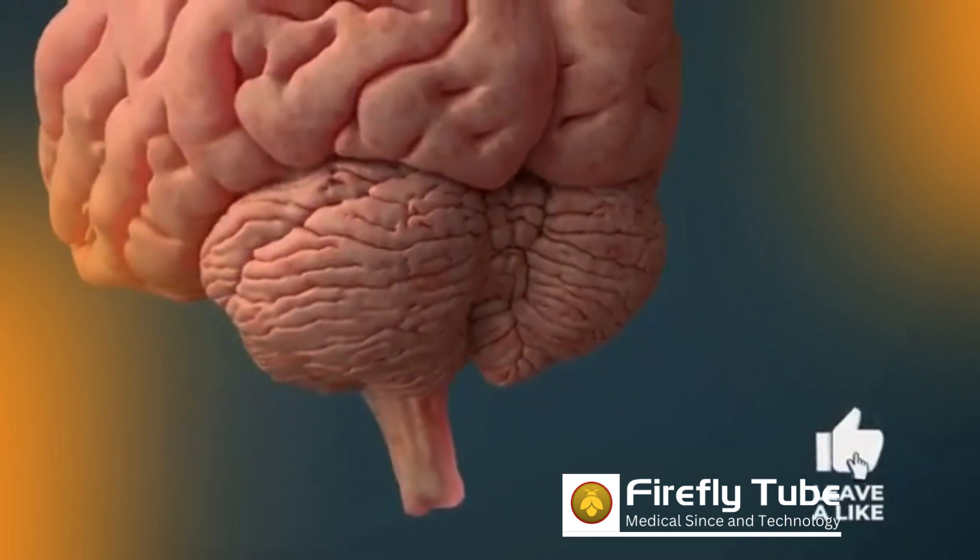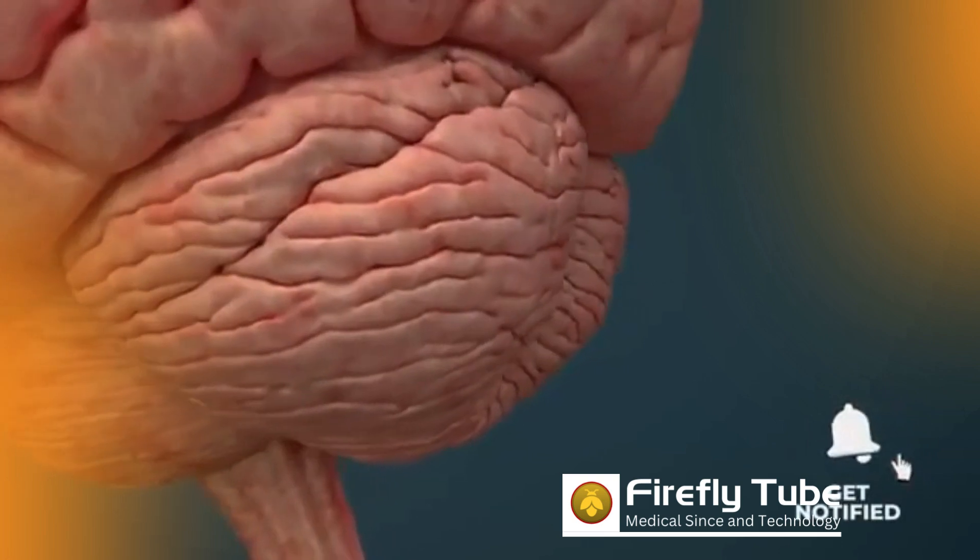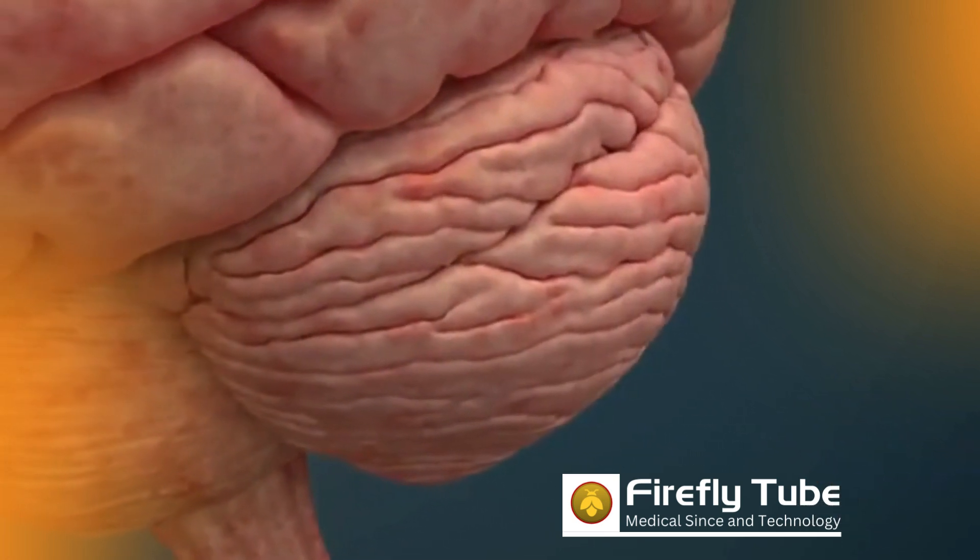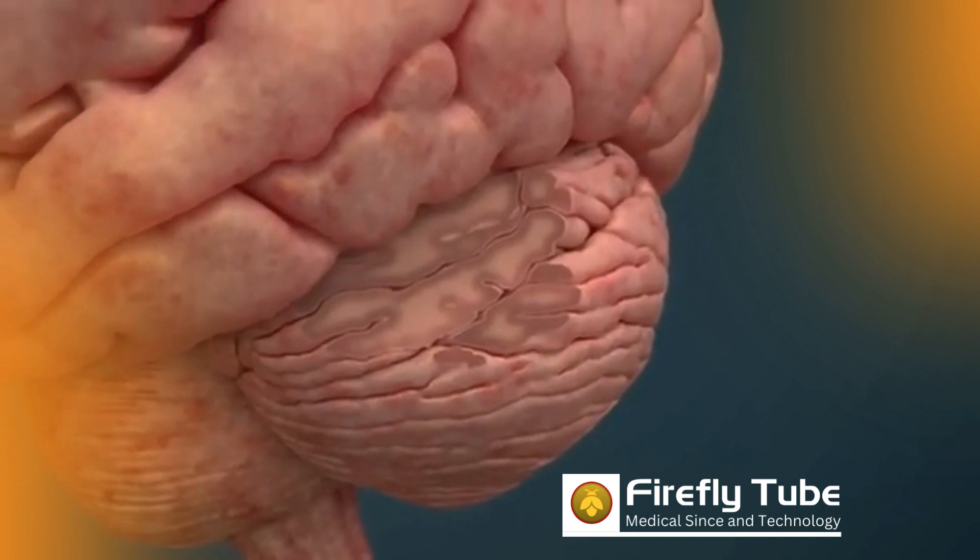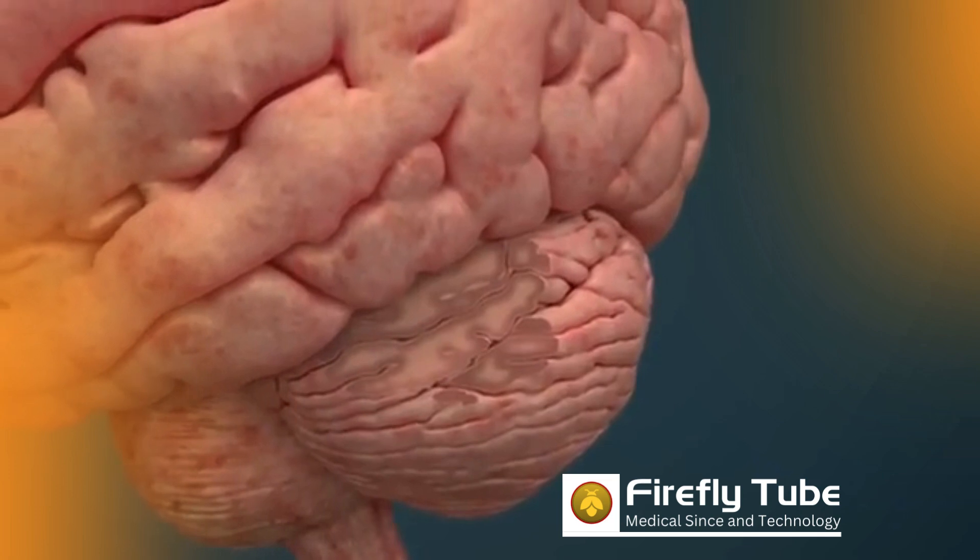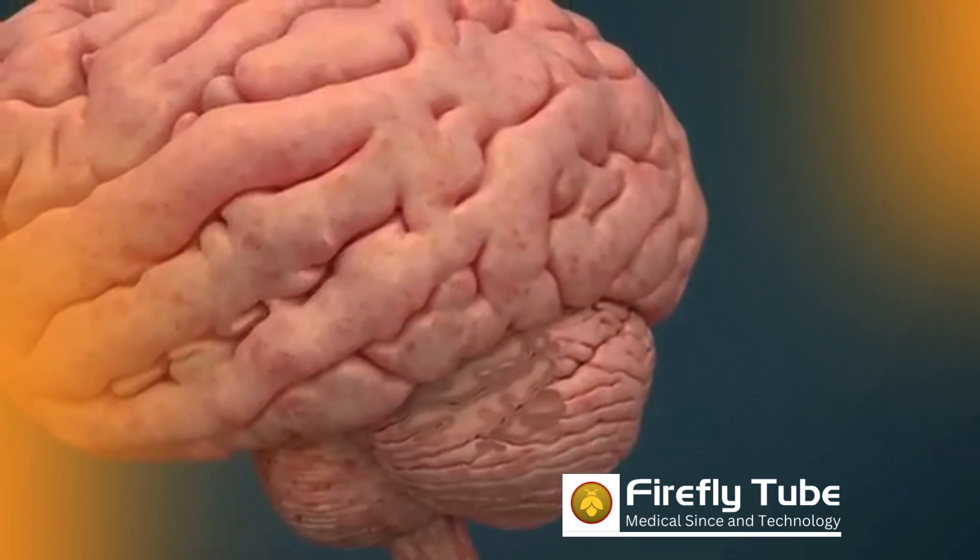The human cerebellum is smaller than the cerebrum, but has a significantly higher cell density. Like the cerebrum, the cerebellum possesses white and gray matter. The most important nerve cells in the cerebellum are Purkinje cells, which can be regarded as the most complex neurons in the entire nervous system.